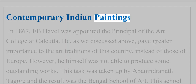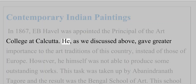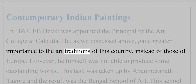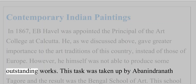Contemporary Indian Paintings. In 1867, E.B. Havel was appointed the Principal of the Art College at Calcutta. He, as we discussed above, gave greater importance to the art traditions of this country instead of those of Europe. However, he himself was not able to produce some outstanding works.